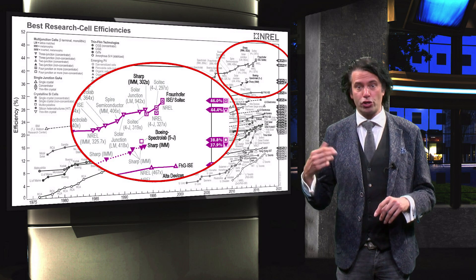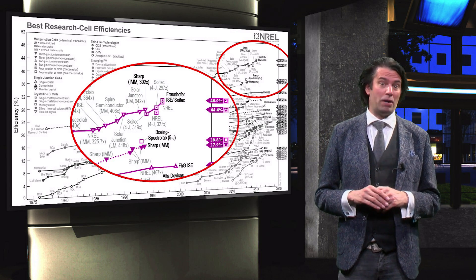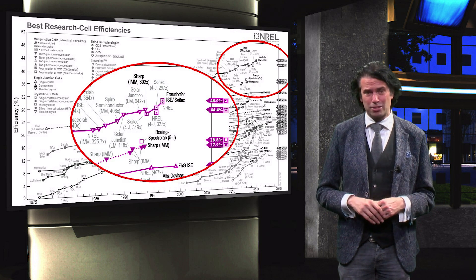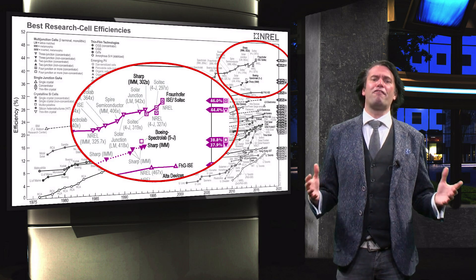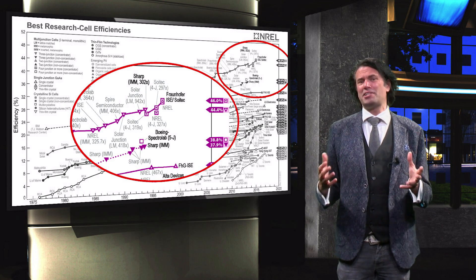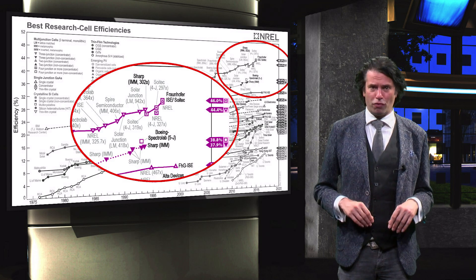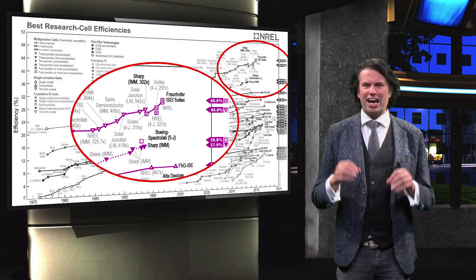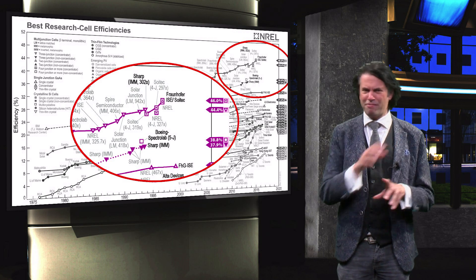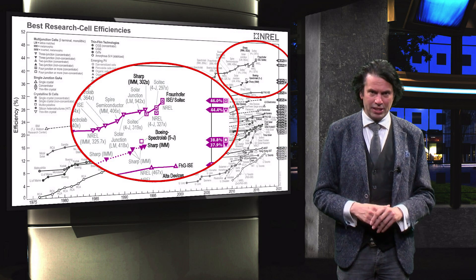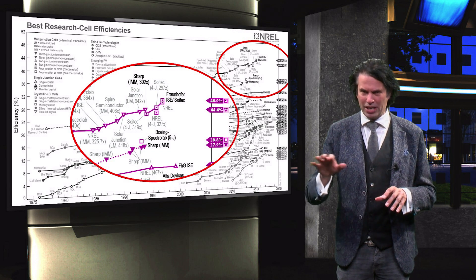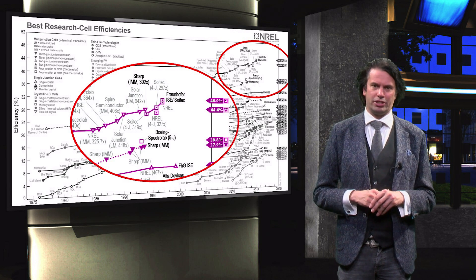The record four junction solar cell with light concentration is developed by Fraunhofer ISE and has an efficiency of 46%. 3.5 semiconductor materials are in principle the most ideal materials for PV applications. As I will discuss in the coming videos, they are direct bandgap materials, have excellent electrical properties, and can approach the Shockley-Queisser limit, as both Auger and Shockley-Read-Hall recombination can be eliminated under standard test conditions.